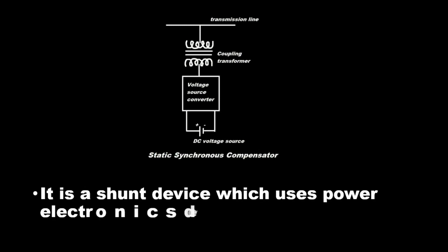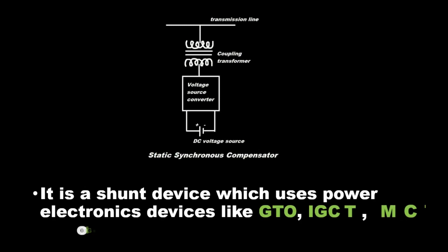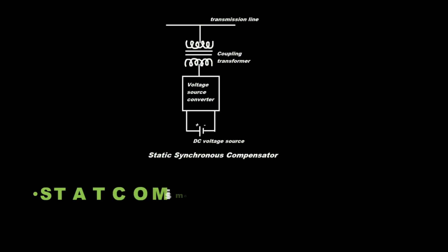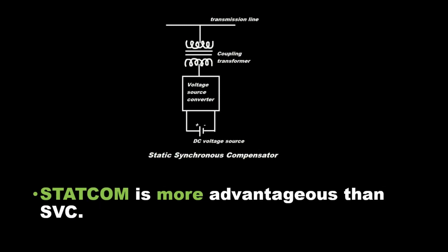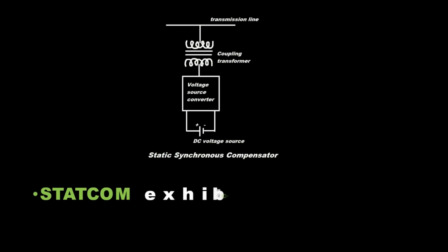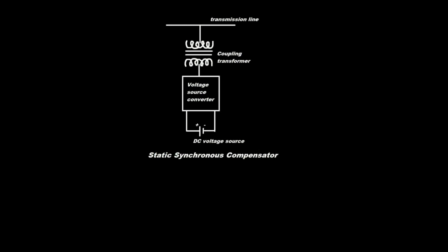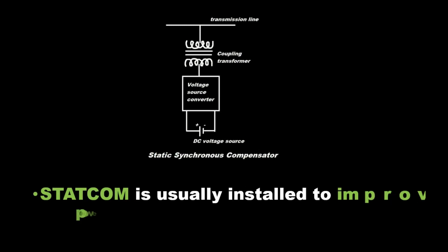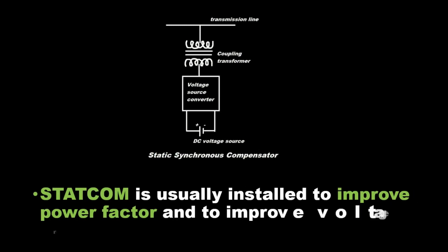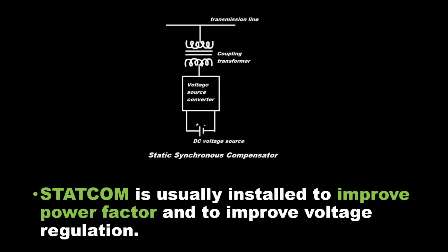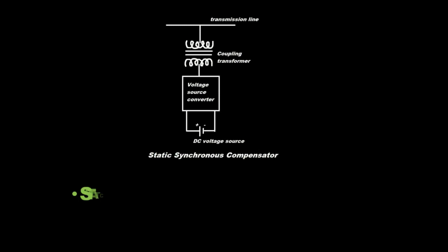It is a shunt device which uses power electronics devices like GTO, IGCT, MCT, or IGBT. STATCOM is more advantageous than SVC. STATCOM exhibits constant current characteristics and is usually installed to improve power factor and voltage regulation.